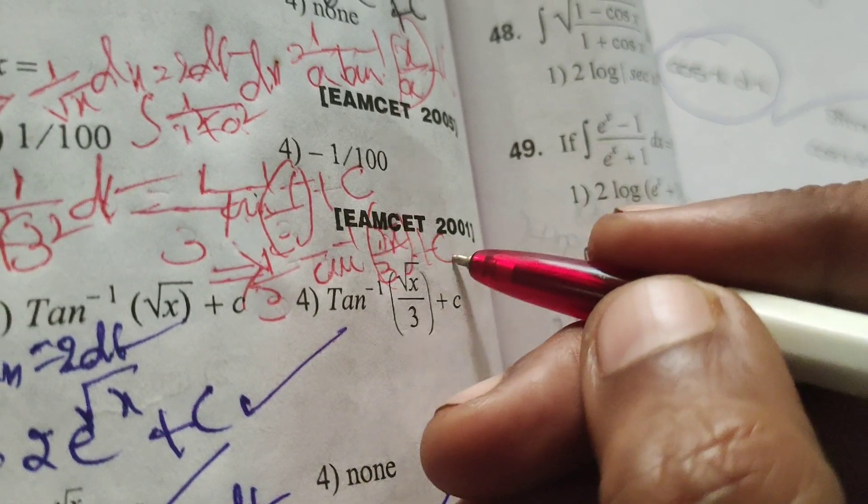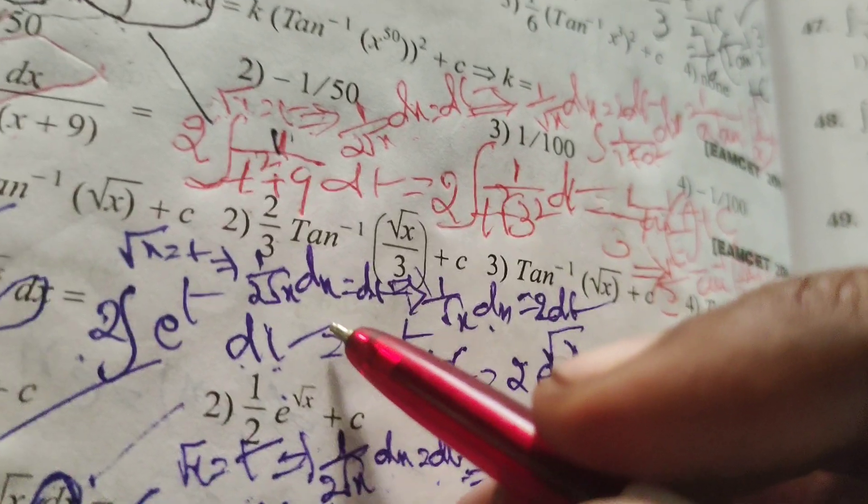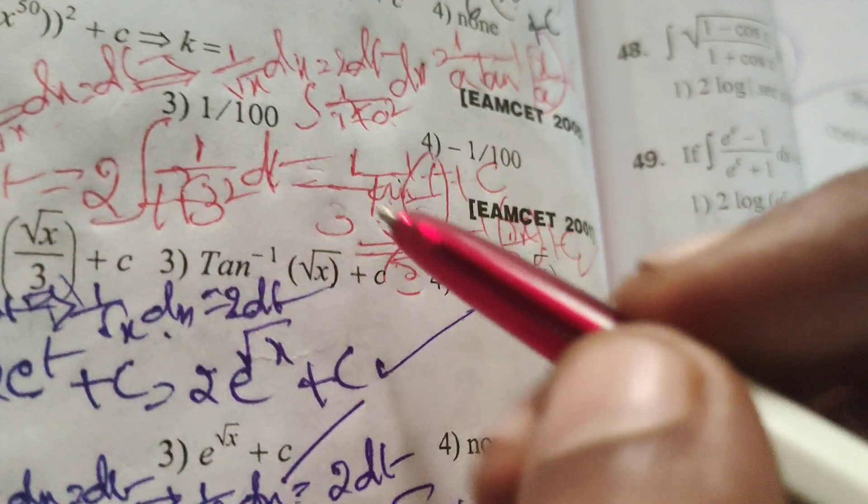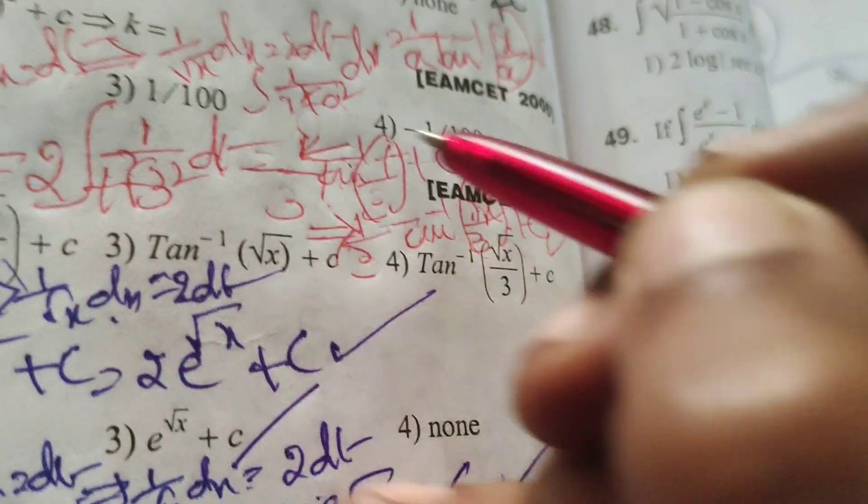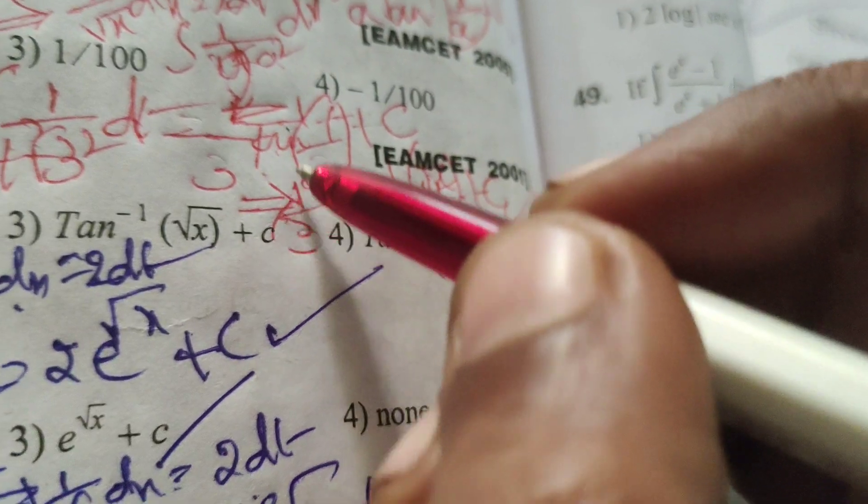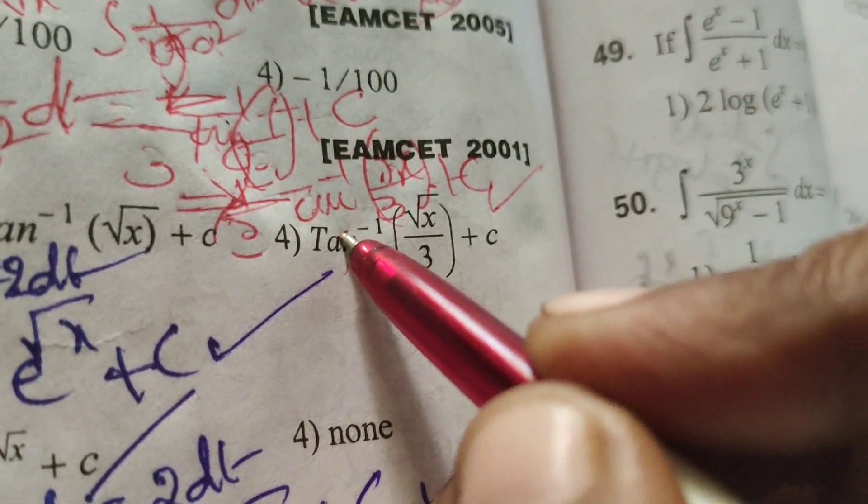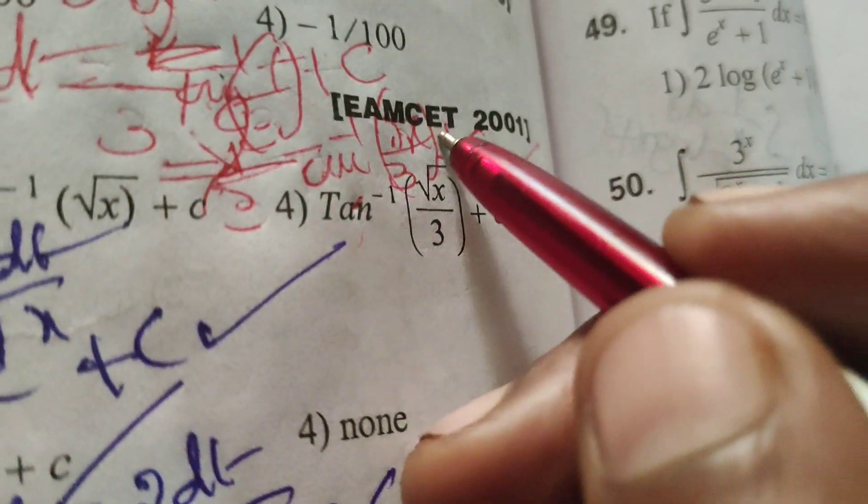This is our solution. Wait, before the integration there was a factor of 2 multiplying. Therefore, the answer is 2 by 3 tan inverse of root x by 3 plus c.